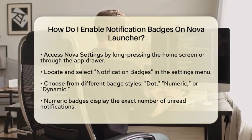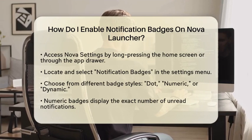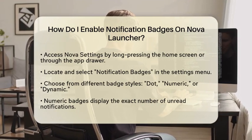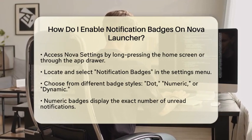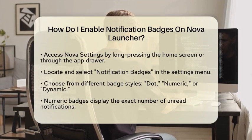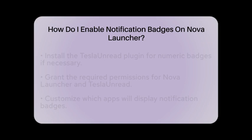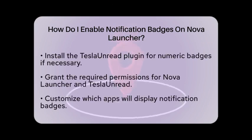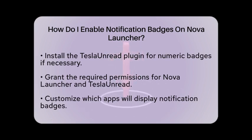If you decide to go with the numeric option, you may need to install the Tesla Unread plugin. This plugin is necessary for numeric badges on some versions of Nova Launcher and Android. Make sure to grant any permissions that Nova Launcher and Tesla Unread might need for notification access.